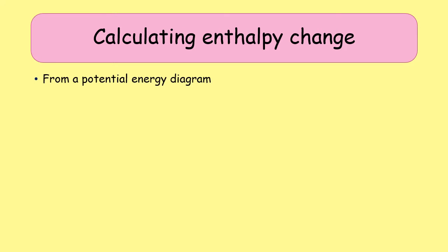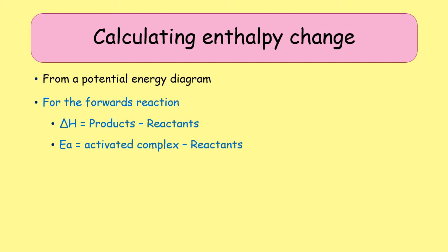When calculating enthalpy changes from potential energy diagrams there are different things you might be asked. For the forward reaction — reactants going to products — the enthalpy change is the energy of the products minus the energy of the reactants, and the activation energy is the energy of the activated complex minus the energy of the reactants.